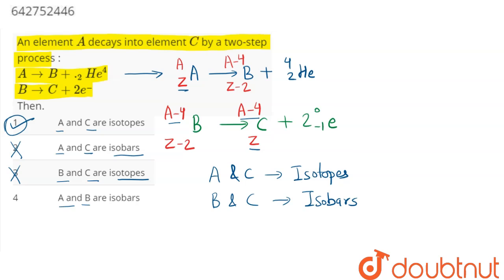Here we can see A and B have different atomic number as well as mass numbers. So they are neither isotope nor isobar. So option 4 is also incorrect. So correct option here, option number 1.